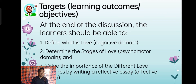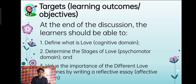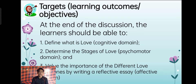At the end of the discussion, the learners should be able to: first, define what is love under the cognitive domain; second, determine the stages of love under the psychomotor domain; and third, value the importance of the different love hormones by writing a reflective essay. This lesson covers brain impulses and hormones present between relationships — man to man, girl to girl, or woman to man.